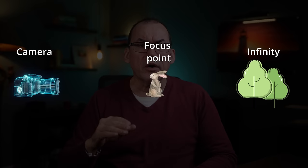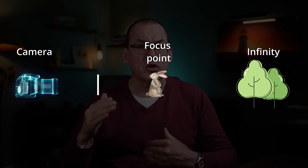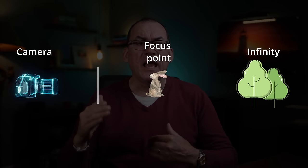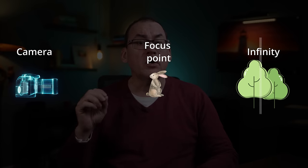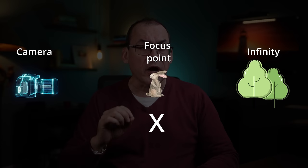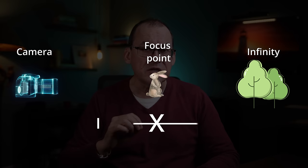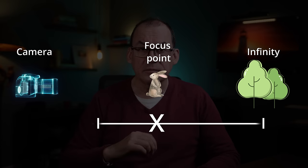The hyperfocal distance is the distance at which everything beyond this distance can be brought into acceptable focus. At the hyperfocal distance, the focus area will start at half the distance to the focus point and extend all the way to infinity. So focused here, everything from half the distance to infinity will be in focus. You can use apps to calculate hyperfocal distance for you.